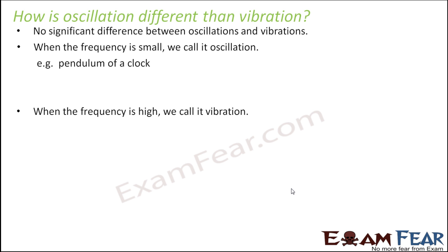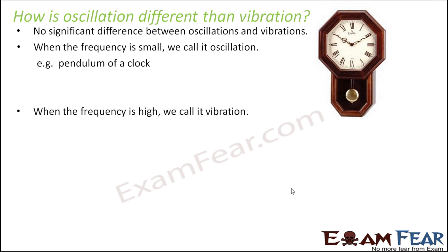Let us take an example to understand this. When we say that the frequency is small, that means it is not moving very fast — the way it moves from one extreme to the other is relatively slow. In that case it is called oscillation, and the best example is the pendulum of your clock. It doesn't move very fast; it moves considerably slower. So that is an example of oscillation. But when the same motion happens in a very fast way — oscillation is like this, but in case of vibration it will be moving very fast, like this, like this — that is vibration.